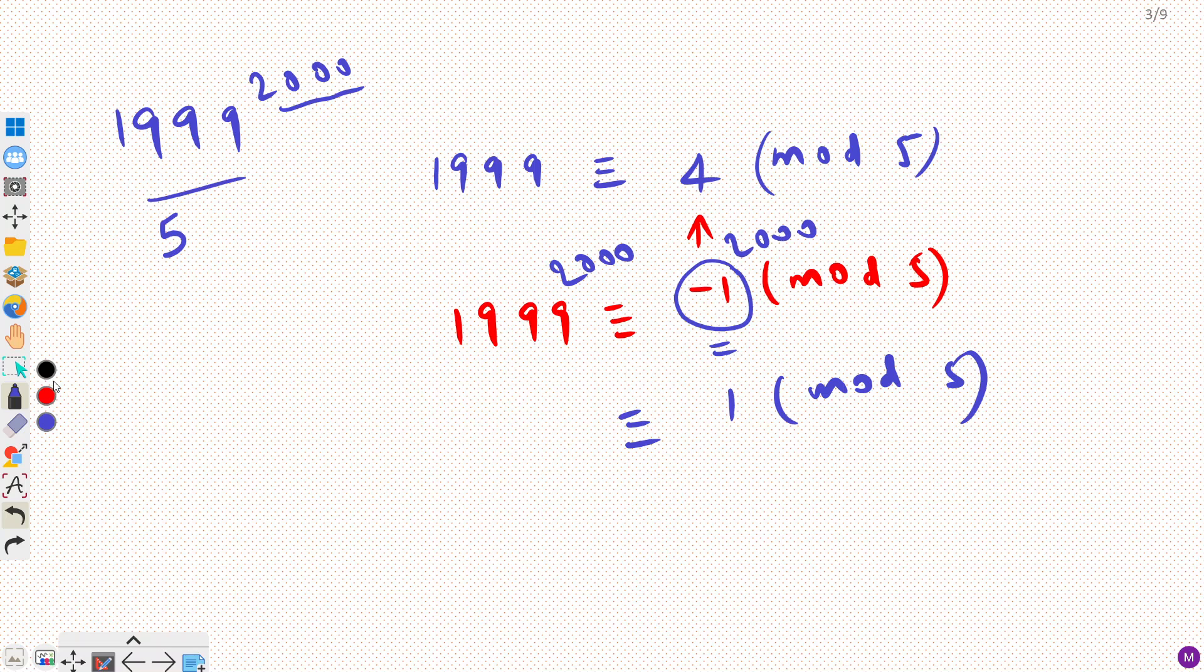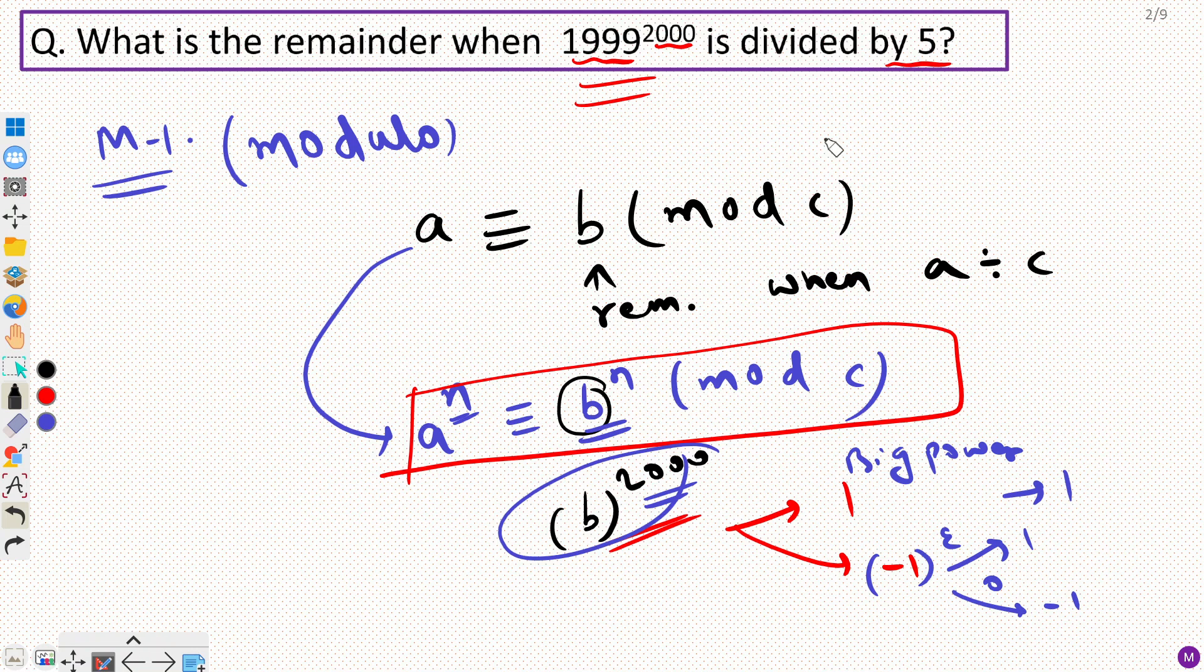So this means that our answer is 1. So this big number gives you a remainder of 1 when you divide by 5. So your answer is 1.